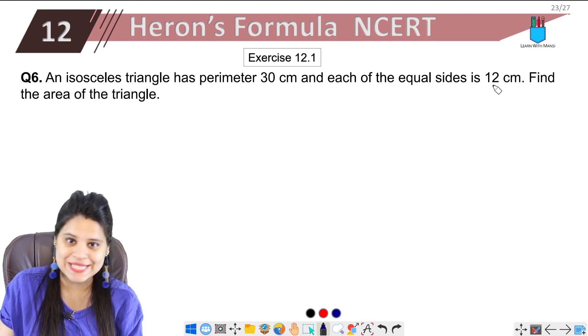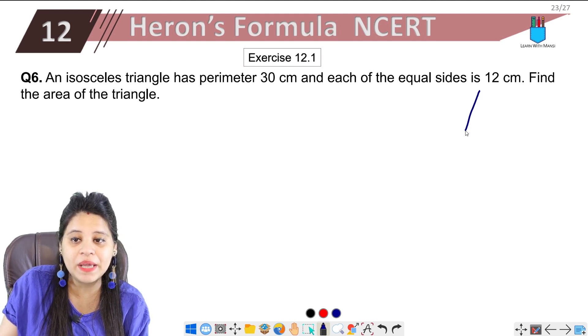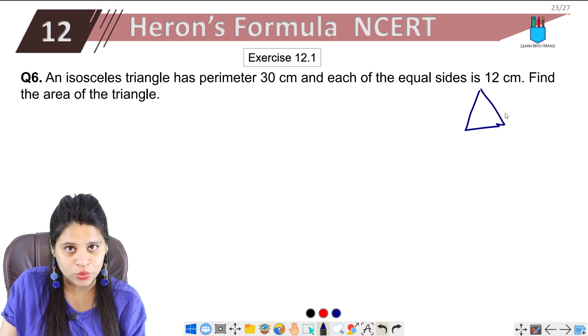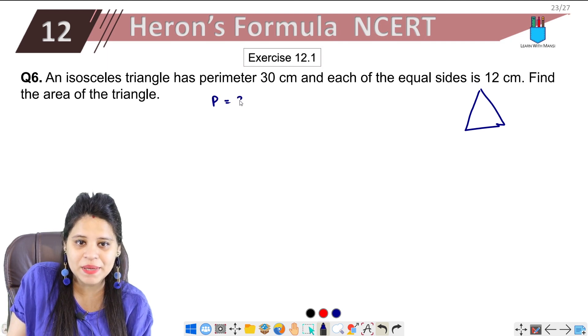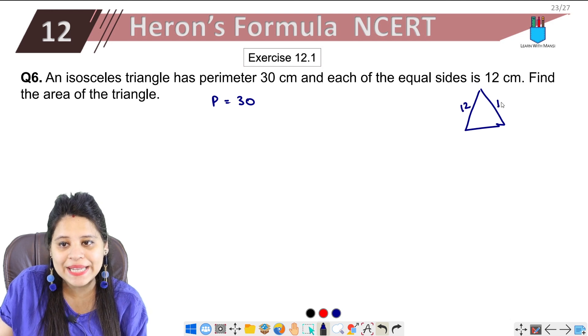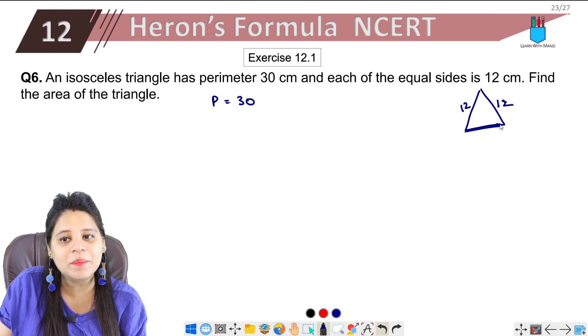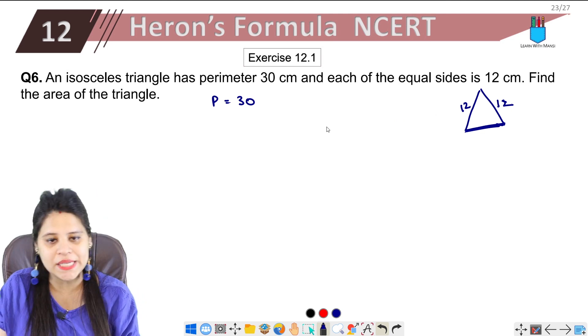So isosceles triangle - we know that it has two equal sides. Its perimeter is given as 30 and two sides are given as 12 and 12. One side we don't have. If perimeter is given, we can easily find the third side.